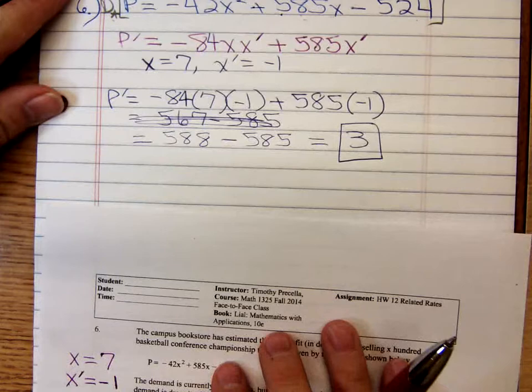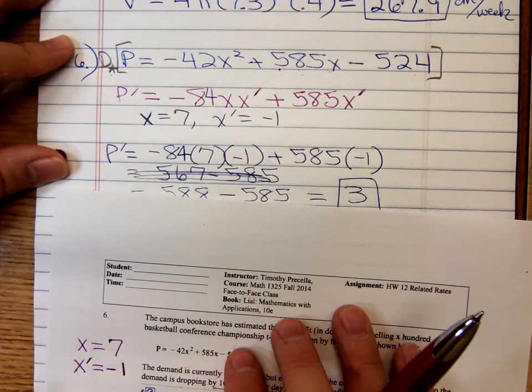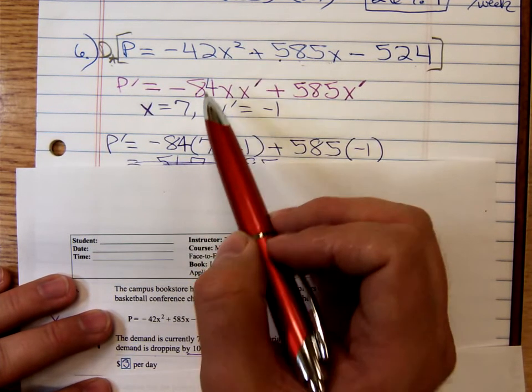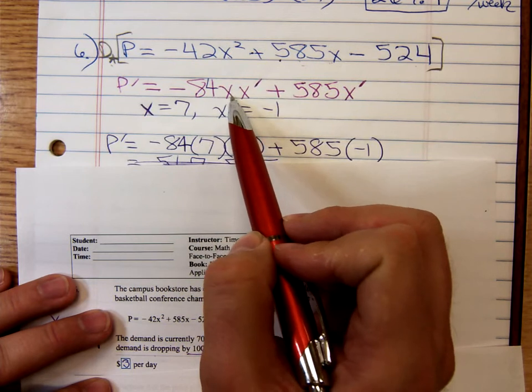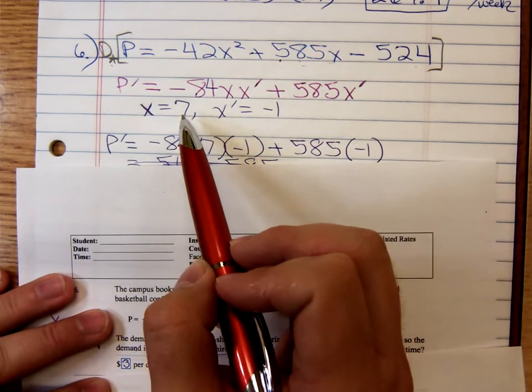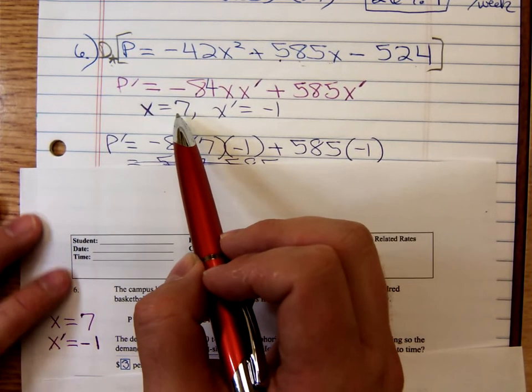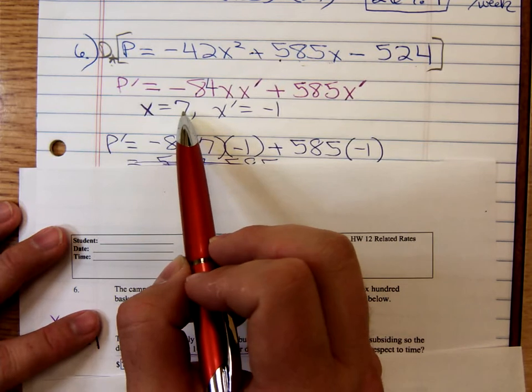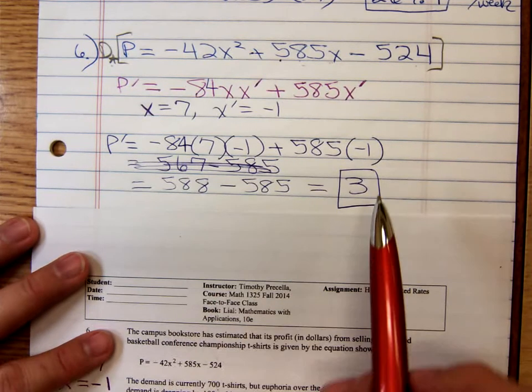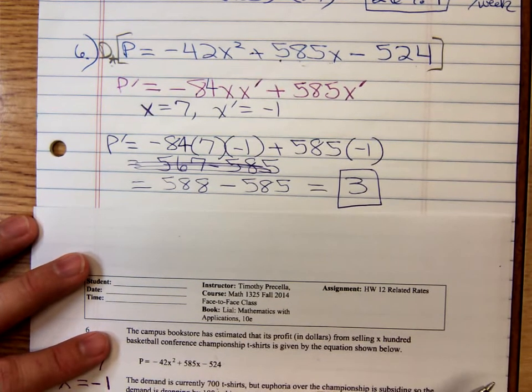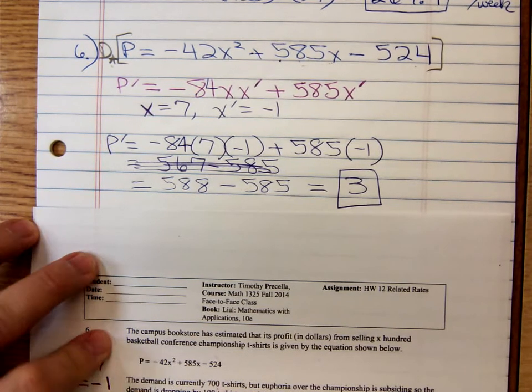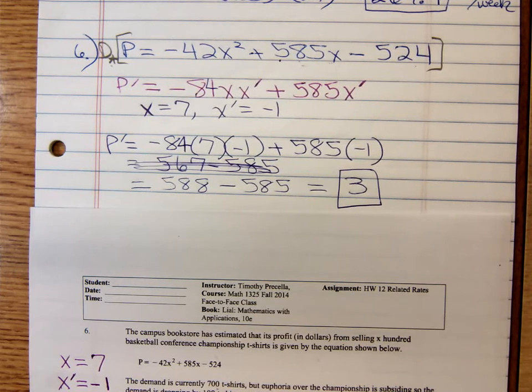And let's see. Where is it? Here it is. Here's the problem. We differentiated. Got p prime equals. That's where I messed up. It should have been a negative 84x to the first power times x prime plus 585 x prime. We've re-read the problem and analyzed the numbers they gave us and decided x is 7 and x prime is negative 1. We plugged in and got a very nice final answer of positive 3. Okay, I think I'm going to take a break now. Maybe drink some more of my green tea. Bye-bye.